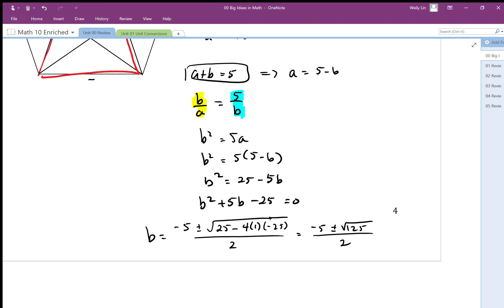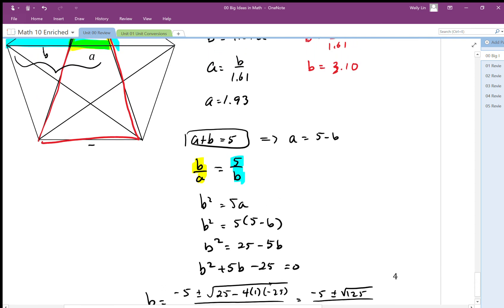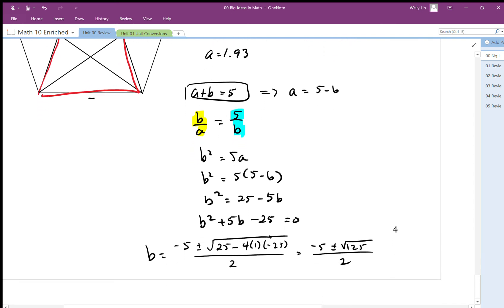So I'm going to calculate: square root of 125, then add that to negative 5 and divide by 2. I get 3.09, which is kind of what I got, 3.10, just because of rounding error. So b equals 3.09, this is actually a more accurate value.